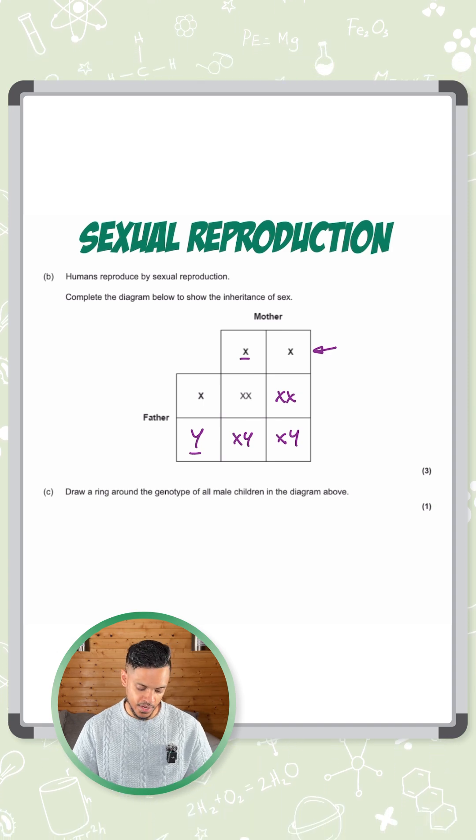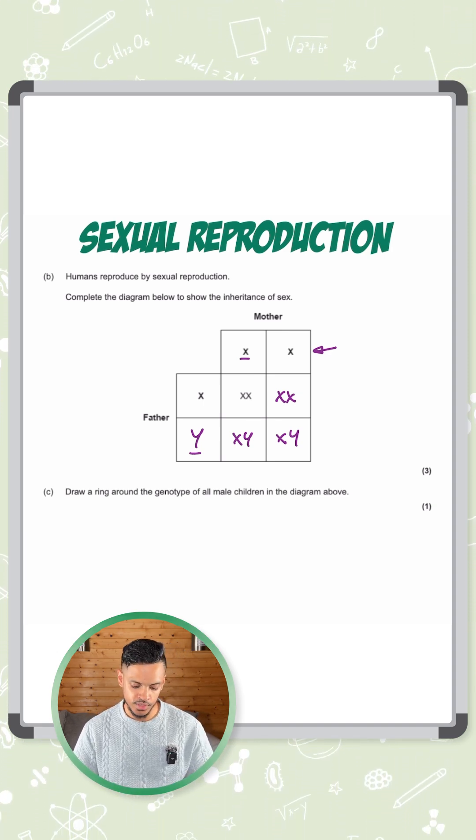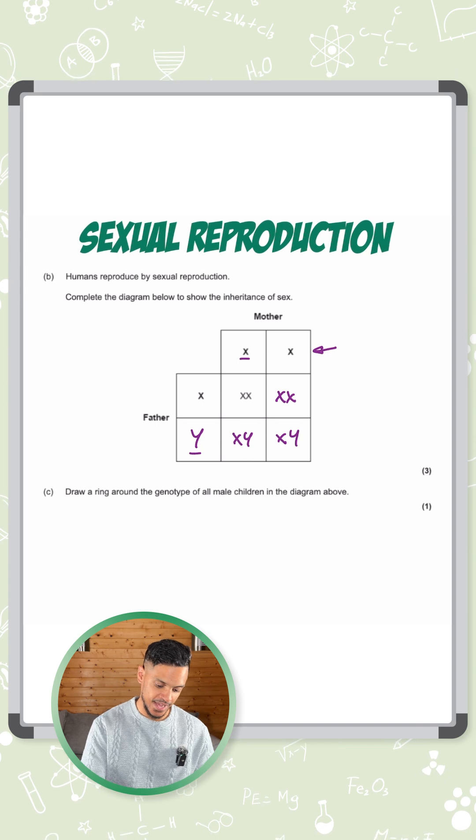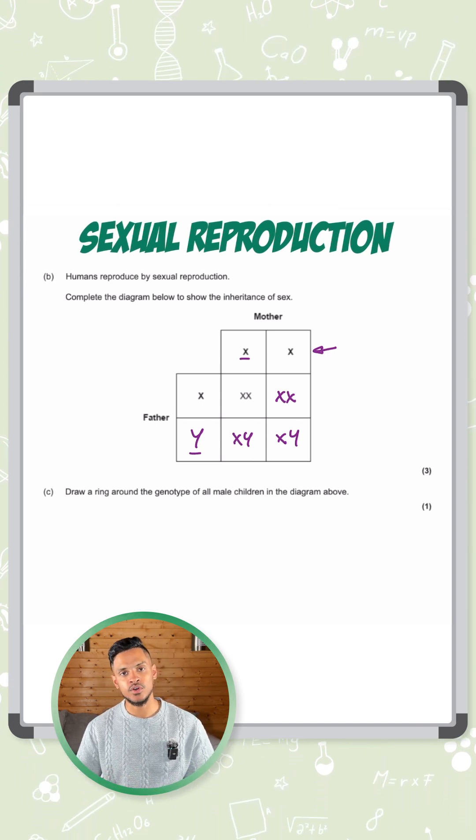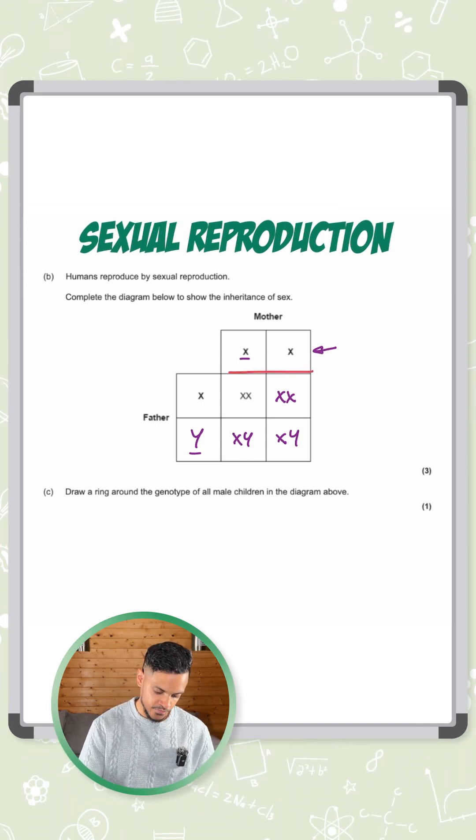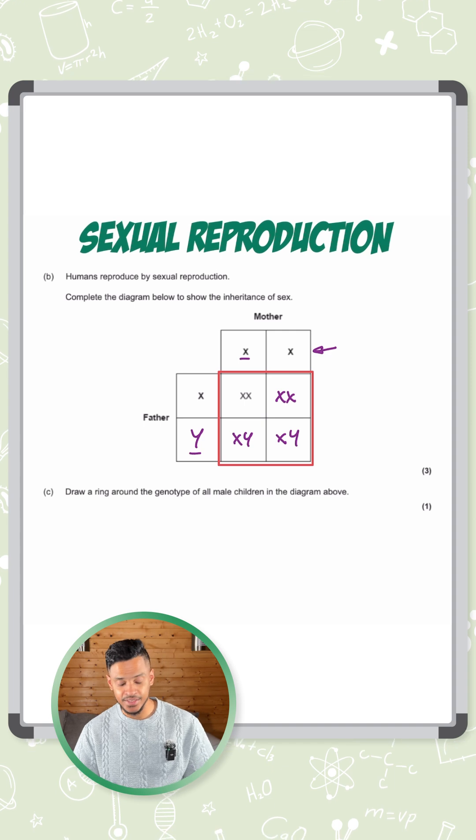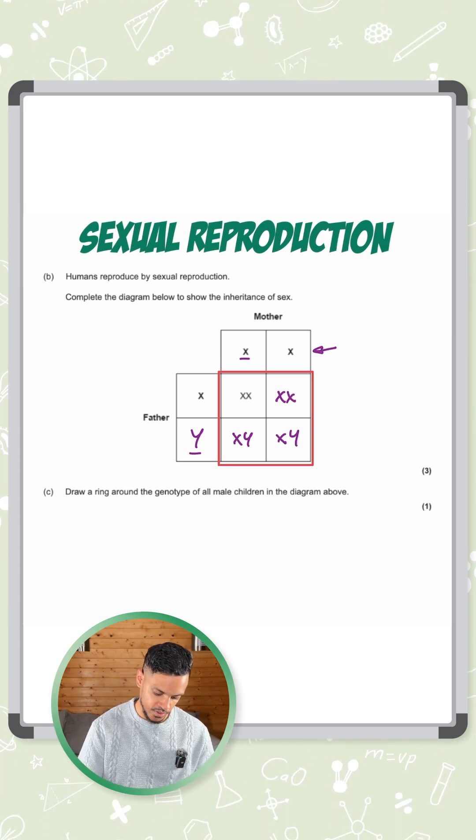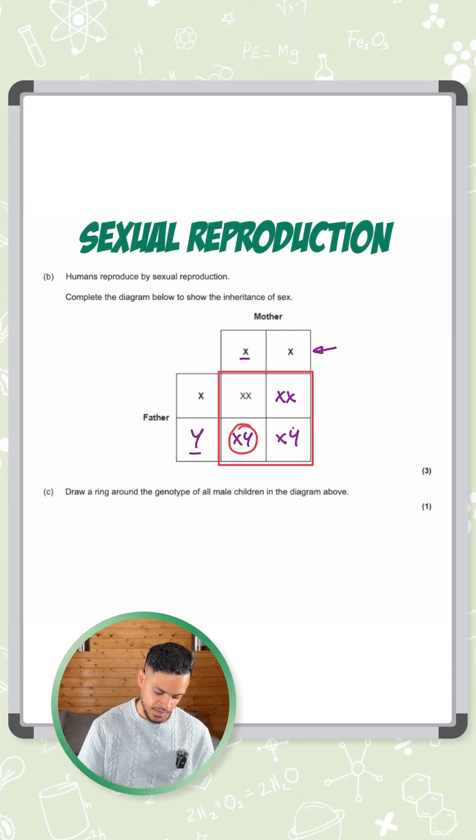It says draw a ring around the genotype of all male children in the diagram above. So that's anything with an XY chromosome in the offspring box, which is basically this box here. So within that box, we've got an XY here and an XY there.